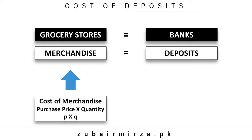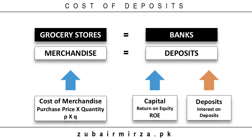Banks act in the same manner. They have money as their merchandise. They have got this money from depositors and shareholders — usually a lot more from depositors than from shareholders. Both types of money come at a cost. So bankers must know the precise average cost of funds in their kitty before they can put this money for sale. Here, we will learn to calculate the weighted average cost of deposits.